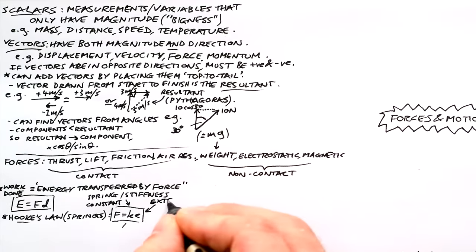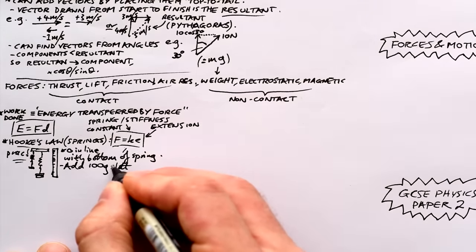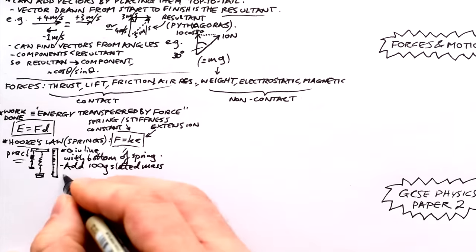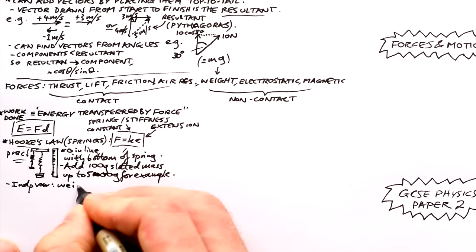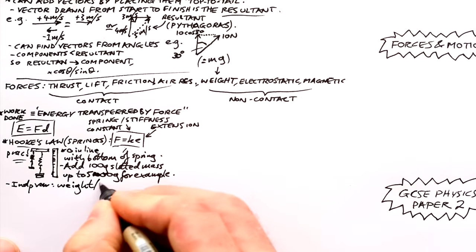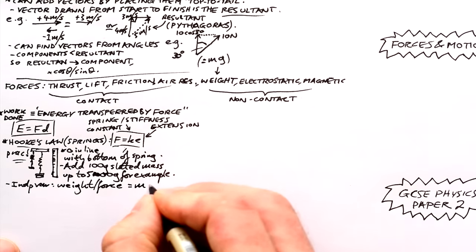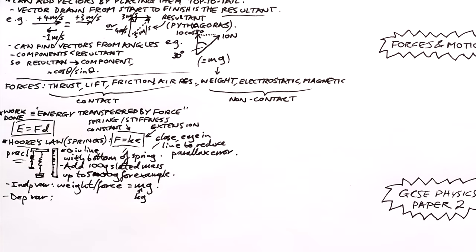Hooke's law is to do with springs, that's F equals KE. K being the spring constant or stiffness and E being the extension. Don't forget that this can be a prac. Make sure that your ruler is fixed with the zero in line with the bottom of the spring. Then we add 100 grams, that's usually just the hanger, measure the extension, then increase the mass up to say 500 grams and see what the extension is for each. Make sure your eye is in line with the spring and ruler and have the ruler close to the spring to reduce parallax error.